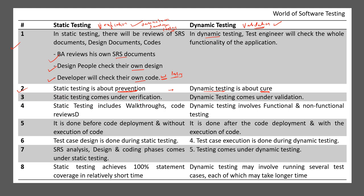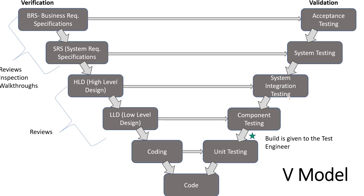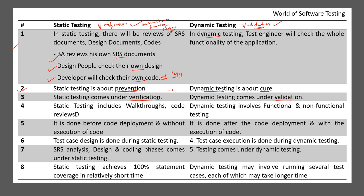The third difference: static testing comes under verification and dynamic testing comes under validation. In verification, all the reviews take place - BRS review, SRS review, design reviews, and coding reviews. These are static activities and act as prevention. In validation, the dynamic testing occurs where the test engineer performs actual test execution to check the functionality of the application.